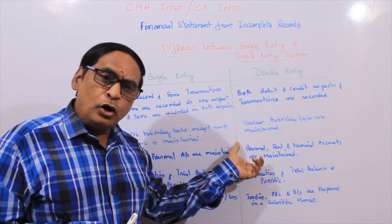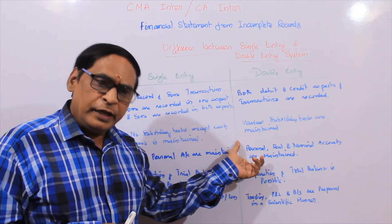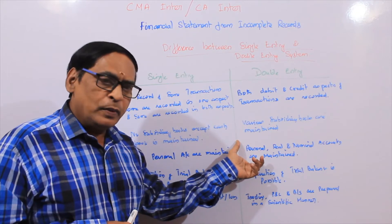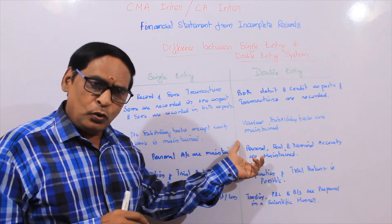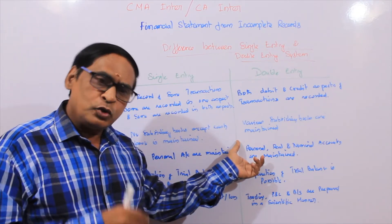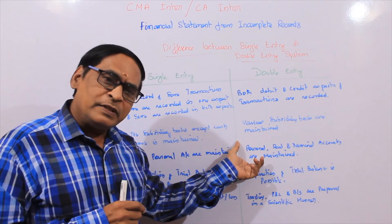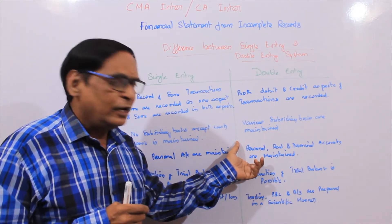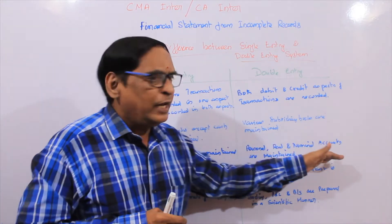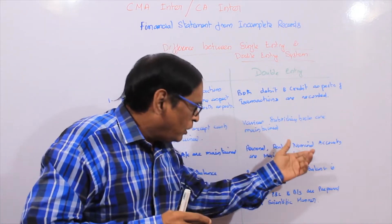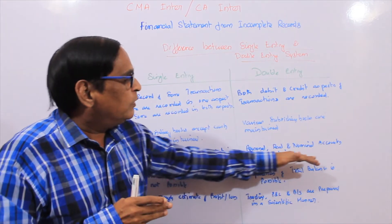There is a rule — personal rule, real rule, nominal rule. Debit the receiver, credit the giver — personal rule. Debit what comes in, credit what goes out — real rule. Debit all expenses and losses, credit all incomes and gains — nominal rule. In double entry system, you apply all three rules to create a double effect.